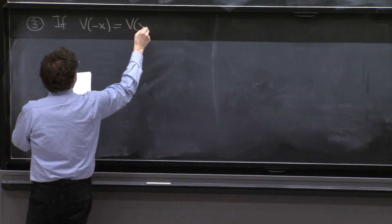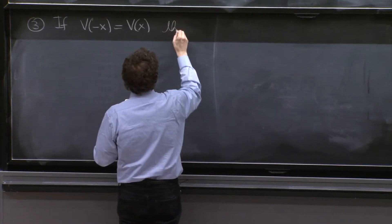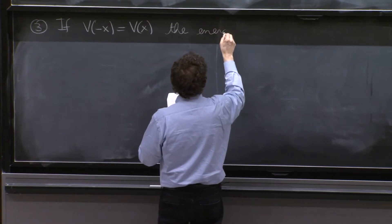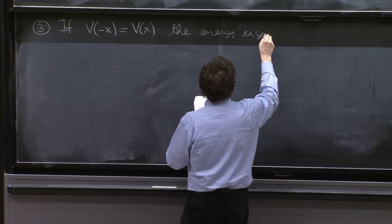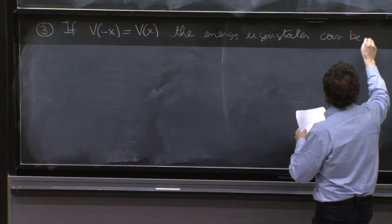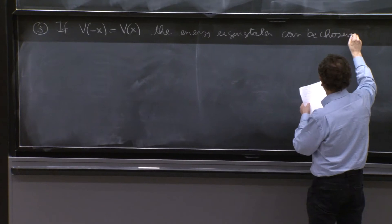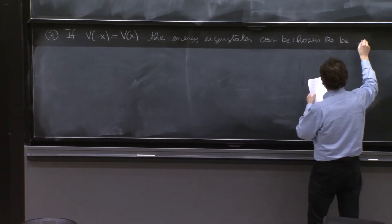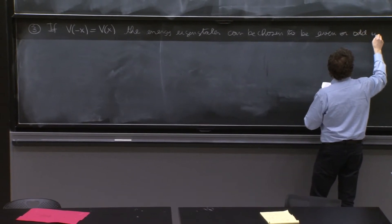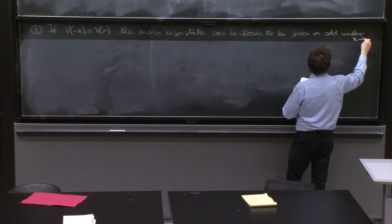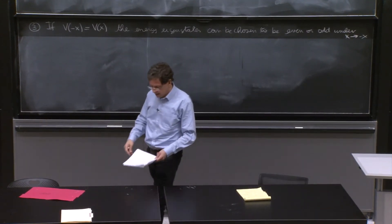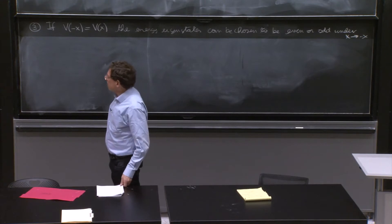It's so important that I think I should do it here. If a potential is even, here comes again the careful statement: the energy eigenstates can be chosen to be even or odd under x goes to minus x.